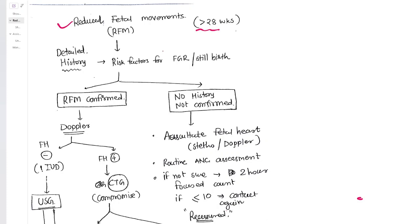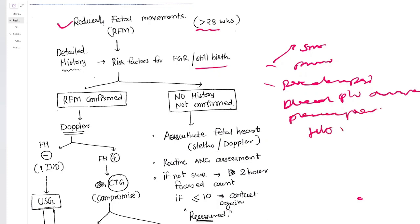Along with that, you need to ask about the risk factors for fetal growth restriction and stillbirth. The risk factors are many, like smoking, primiparity, preeclampsia, bleeding per vaginum during pregnancy, placenta previa, history of previous abruption of placenta, and congenital anomalies. Many of these things are risk factors for FGR or stillbirth, so we need to find out those risk factors.